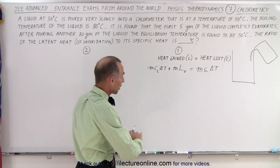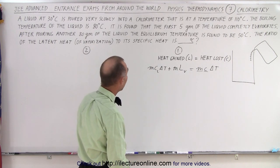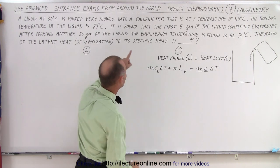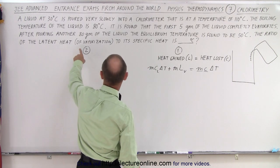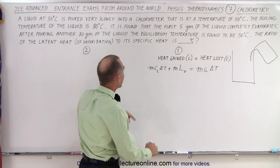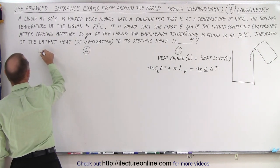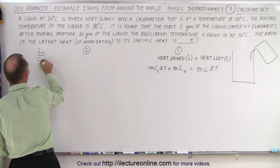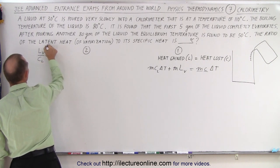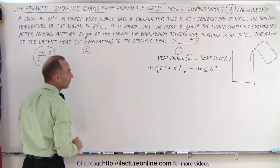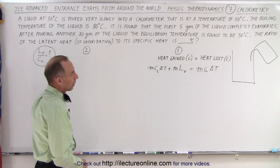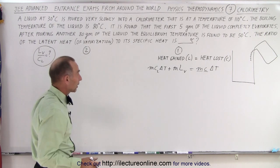So somehow we need to be able to eliminate that. And we're going to need the ratio of the latent heat of vaporization to its specific heat. So right here what we want is the latent heat of vaporization divided by the specific heat of the liquid. That's ultimately what we're trying to find. Okay, let's plug in what we know and see where we can get to.